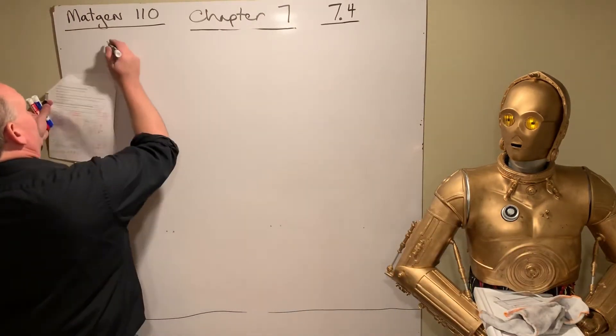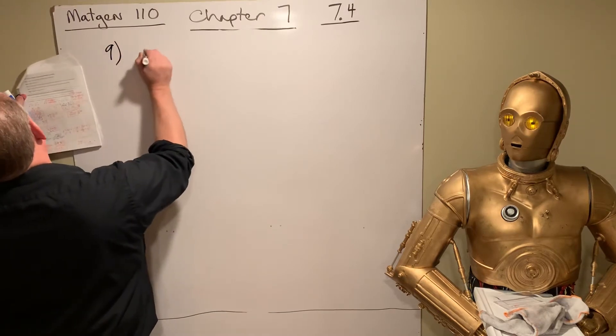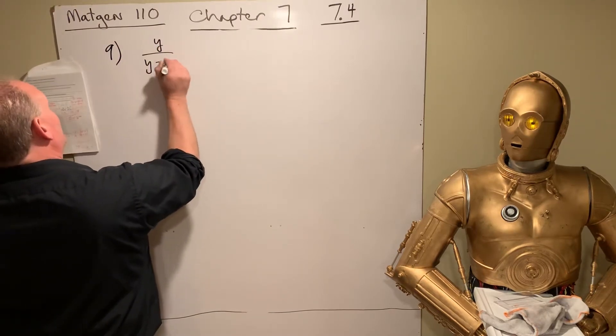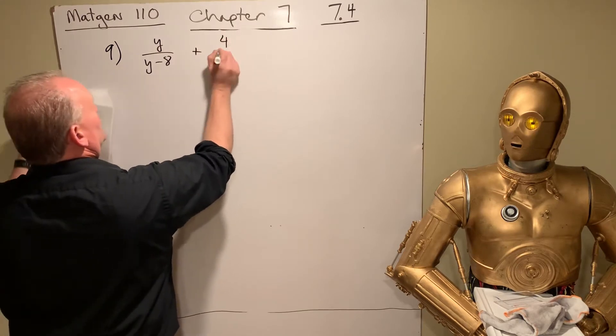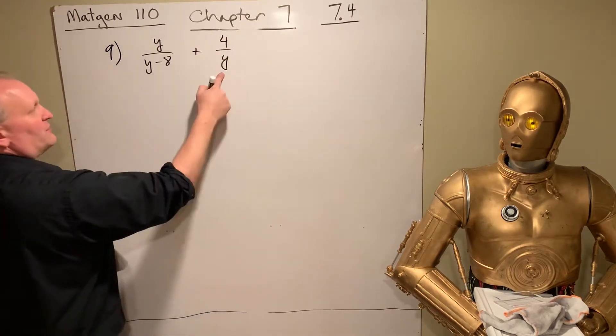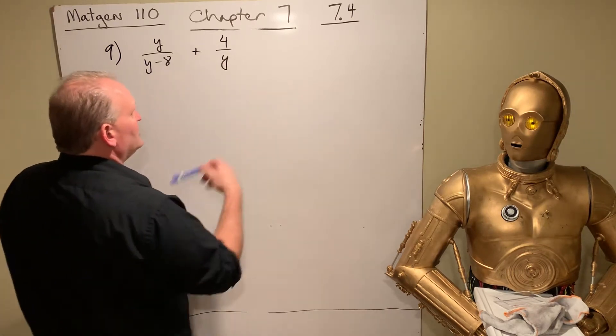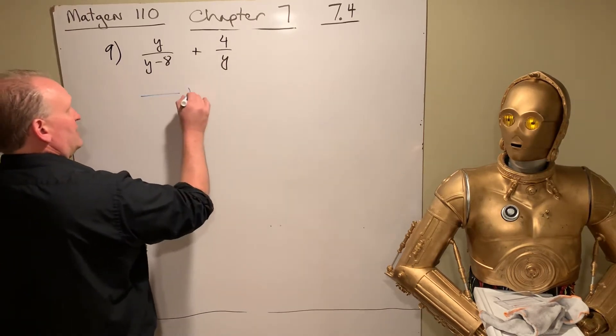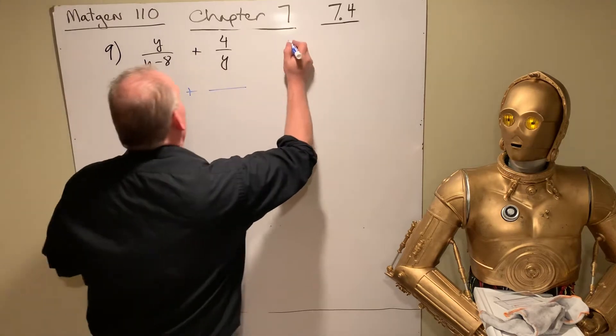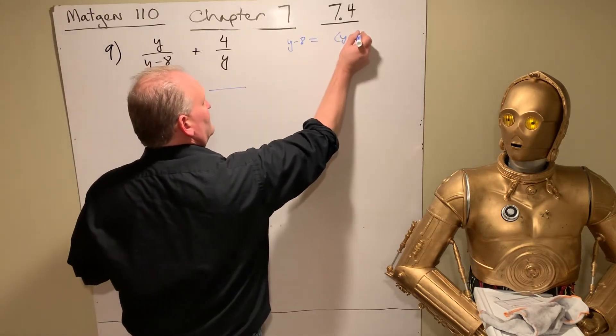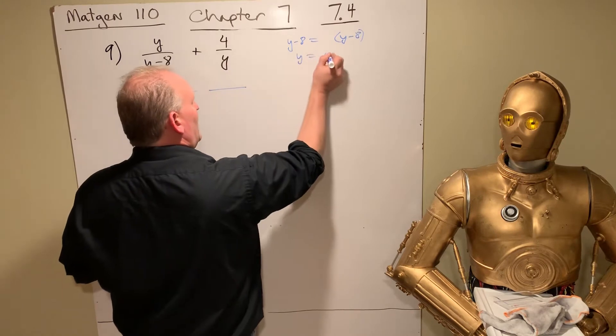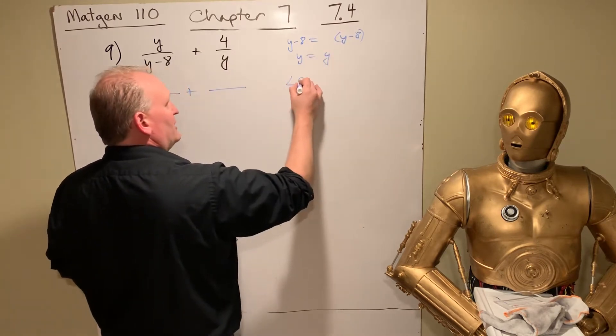Let's take a look at number 9. We got Y over Y minus 8 plus 4 over Y. So this one, they're relatively primed. So they would have nothing in common. So you take them both. So the LCD here. If we write it out, look. This is Y minus 8. This is just Y. There's nothing in common.